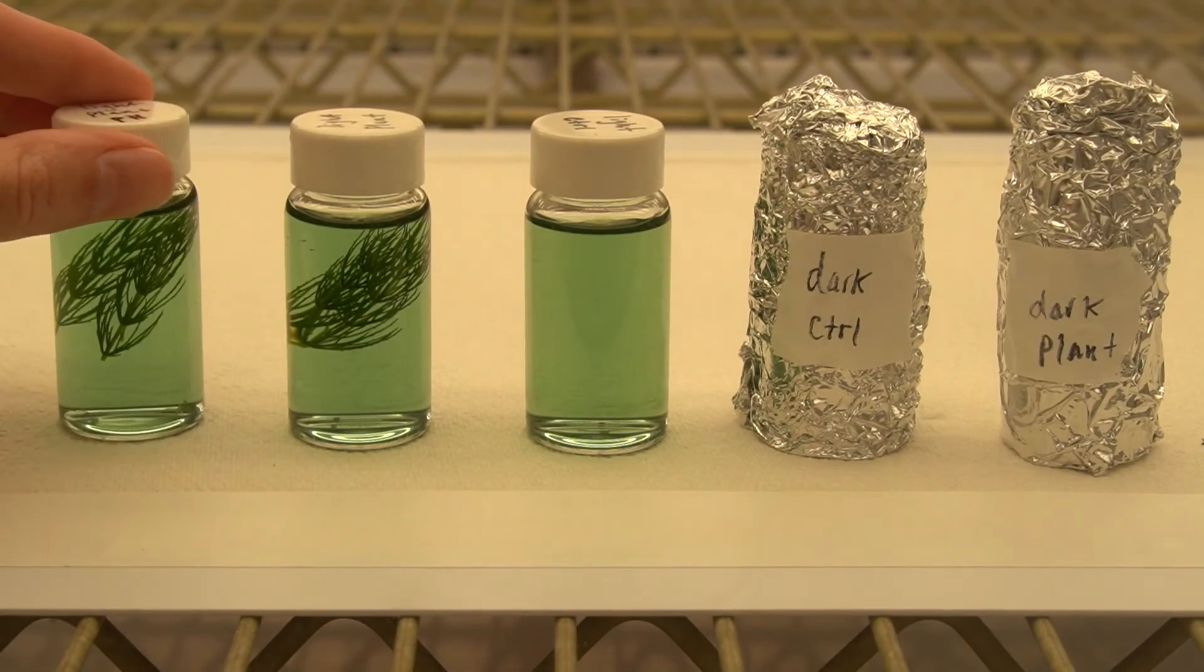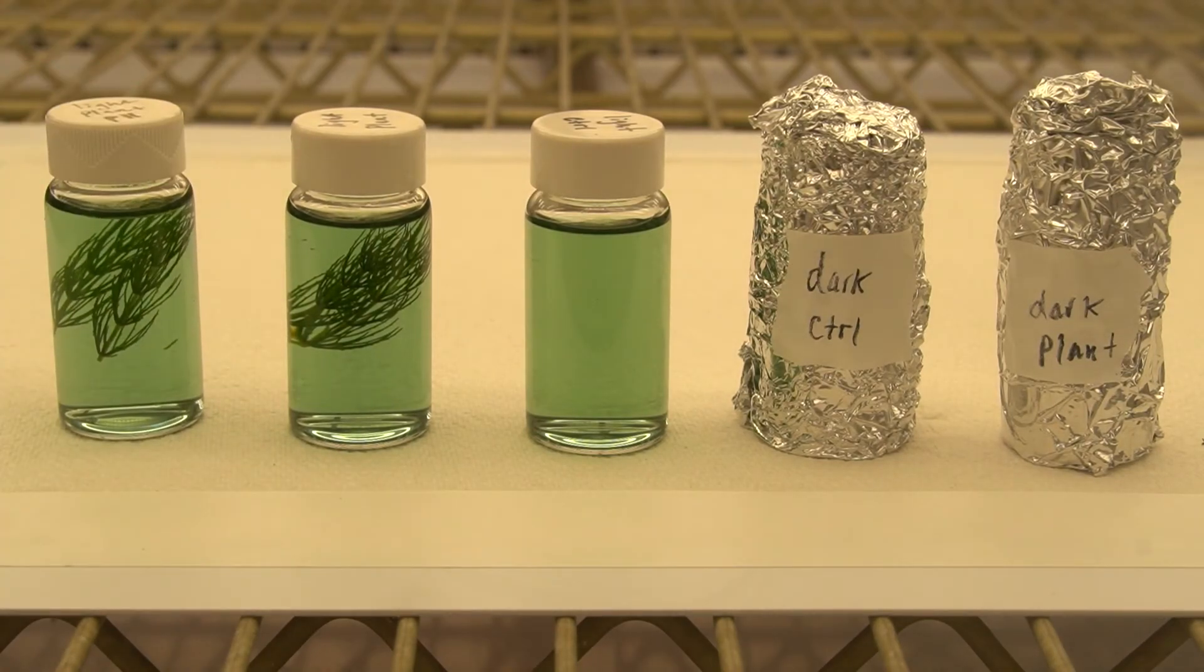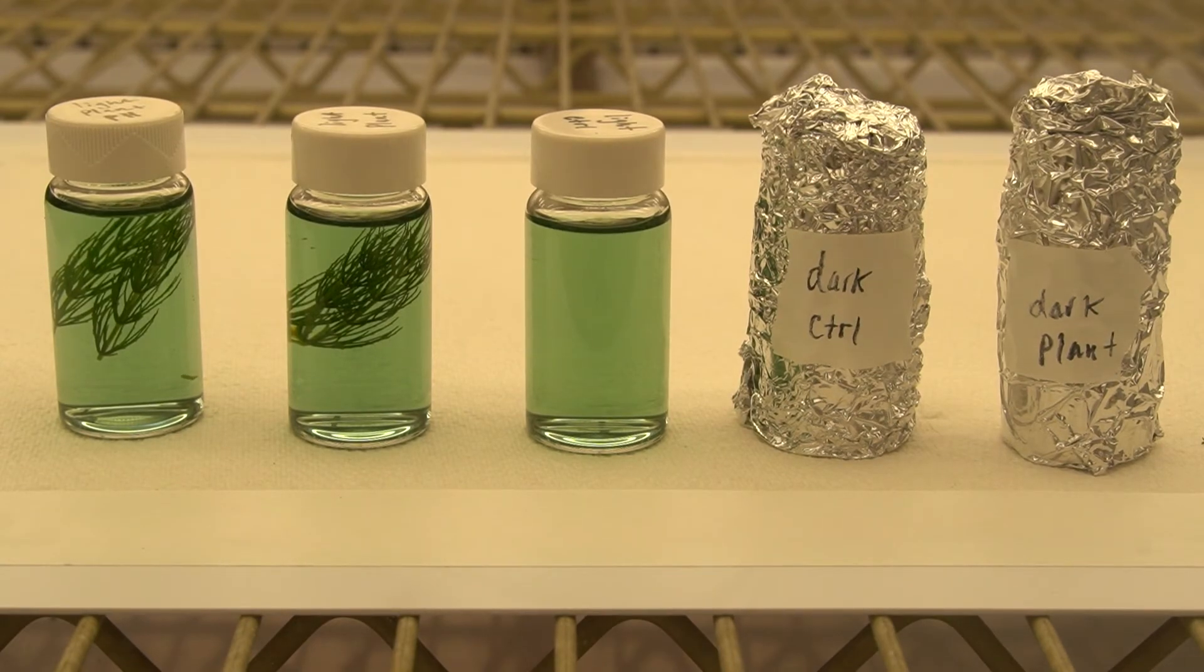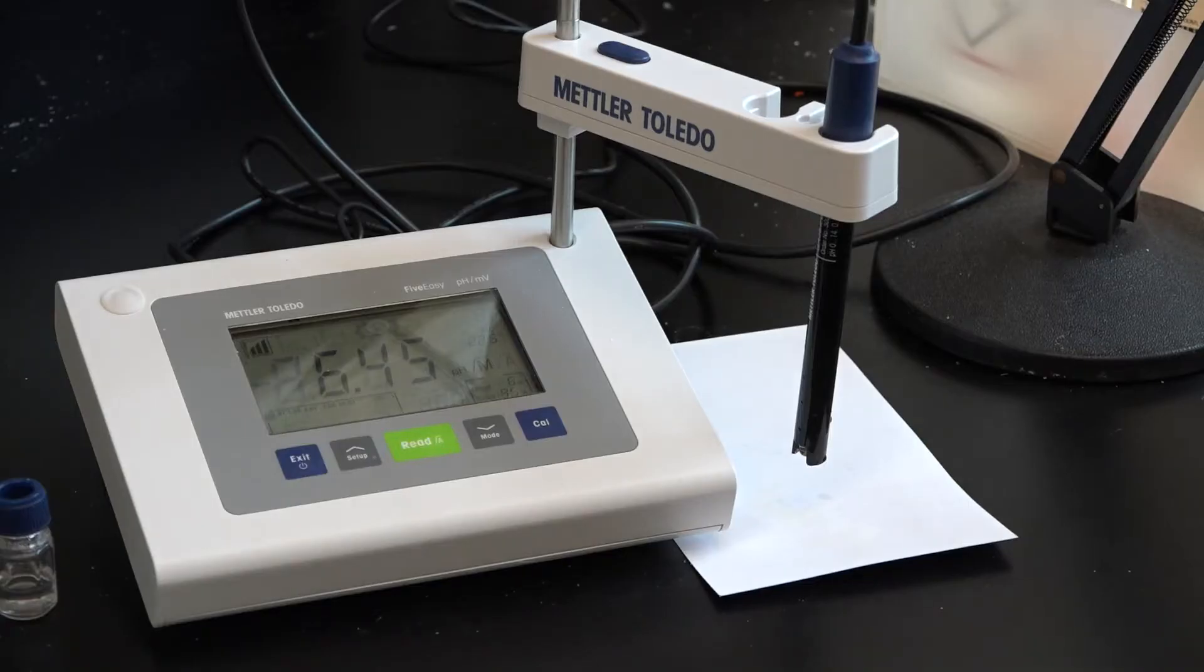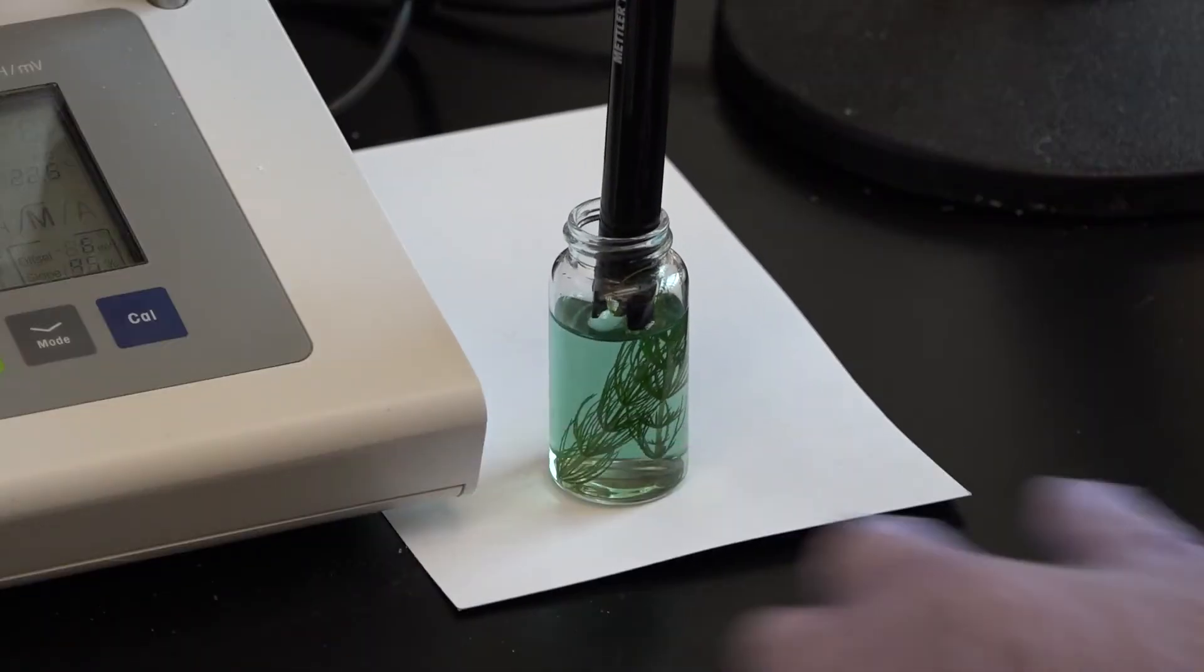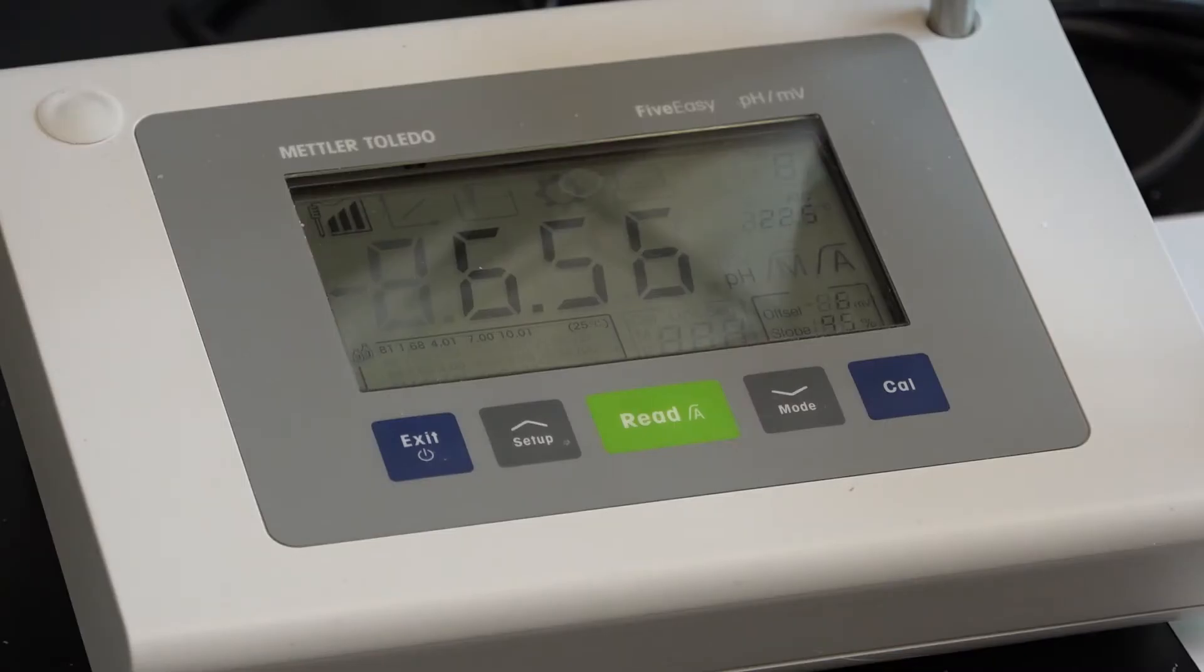Here's an additional plant vial that will stay in the light. I'm going to use a pH meter to precisely quantify its pH throughout the experiment. Let's take an initial reading to see where we're starting off. This is the pH meter. I'm going to place the sensor inside the vial, press take reading, and voila! It's 6.63.